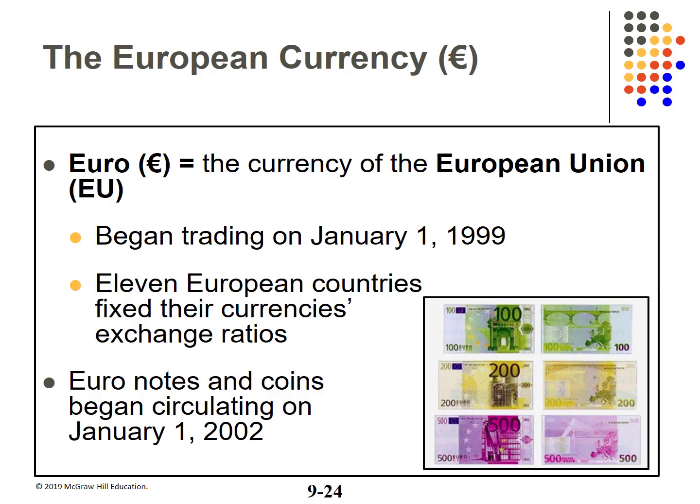Denmark is an EU member but opted out of adopting the Euro. Seven countries will join once they've met the EU's convergence criteria outlined in the Maastricht Treaty: Bulgaria, Croatia, the Czech Republic, Hungary, Poland, Romania, and Sweden.